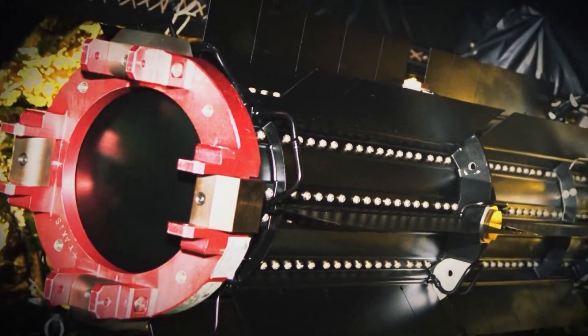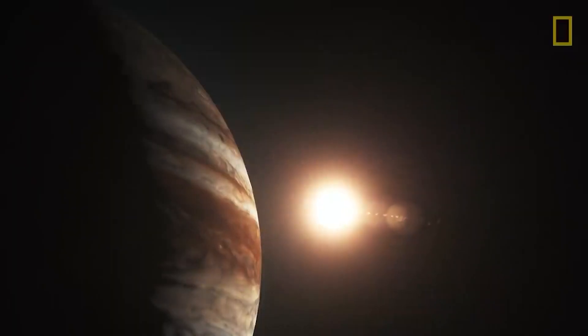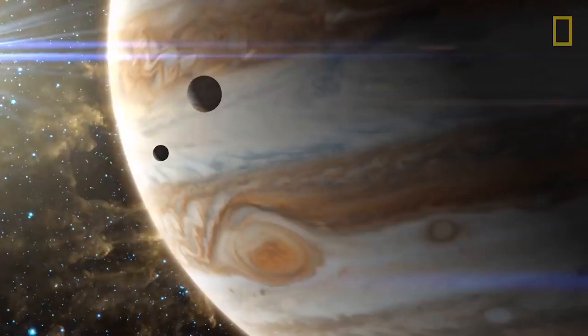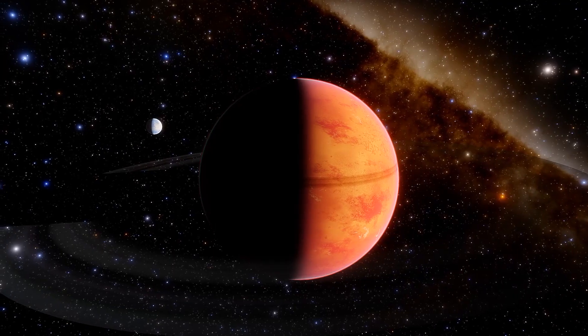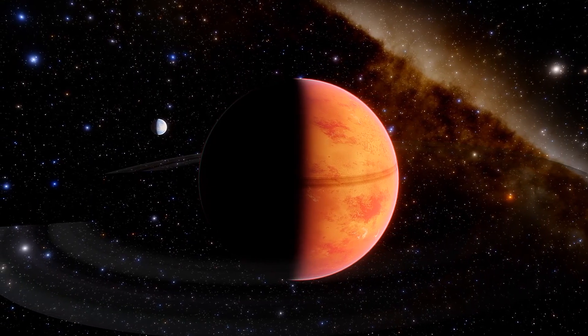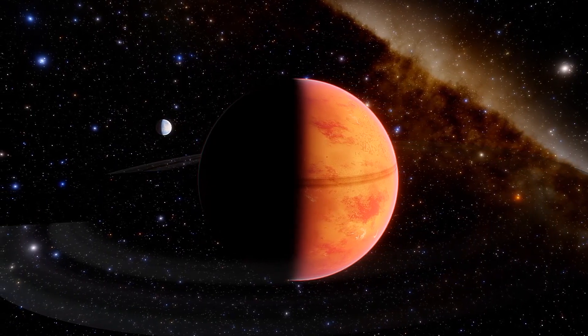Voyager 1 also discovered a very faint ring system around Jupiter, made of dust ejected from the inner moons after high-velocity impacts. The rings are far less dramatic than Saturn's, but are equally interesting scientifically.